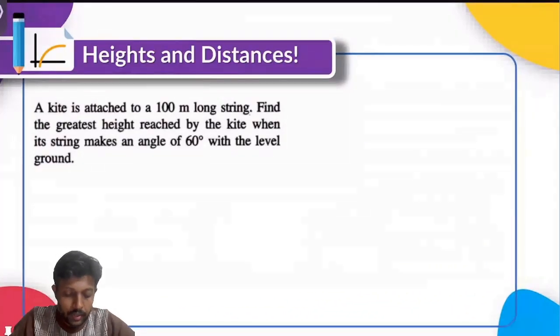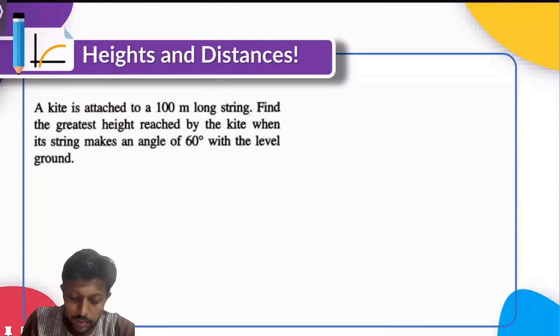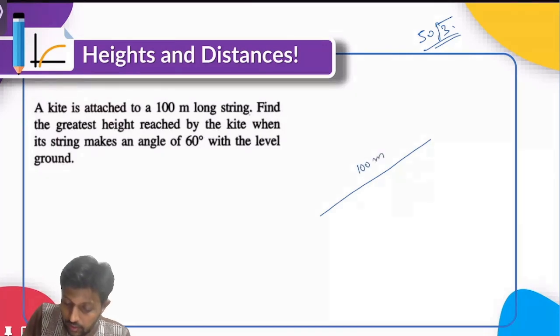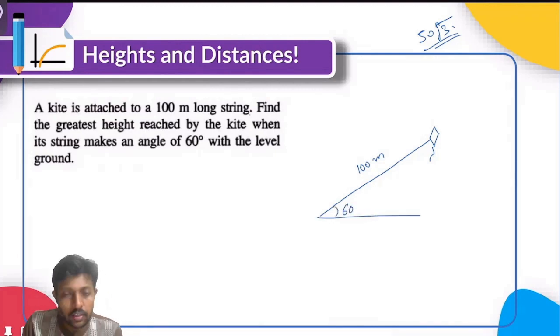Let me draw the schematic first. So a kite is attached to a 100 meter long string. Sir, I got 50 root 3. 50 root 3. Let me write the answer here and then we'll quickly check if that's correct. Let's check out. So there is this string. It's 100 meters long and at the end of it we have a kite. Find the greatest height reached by the kite when its string makes an angle 60 degree with the level ground. So when it makes 60 degree here, the question is asking what height has the kite reached.